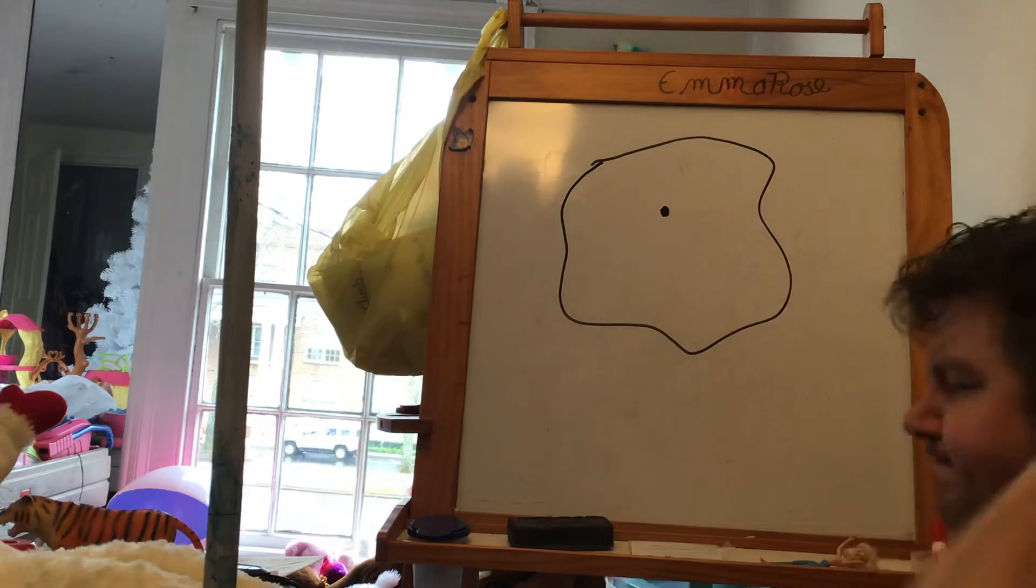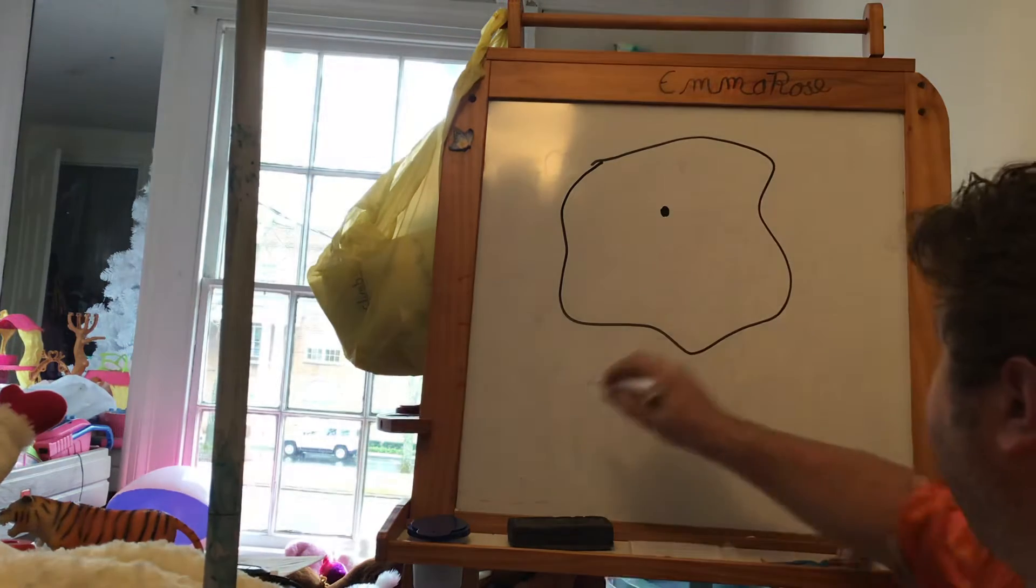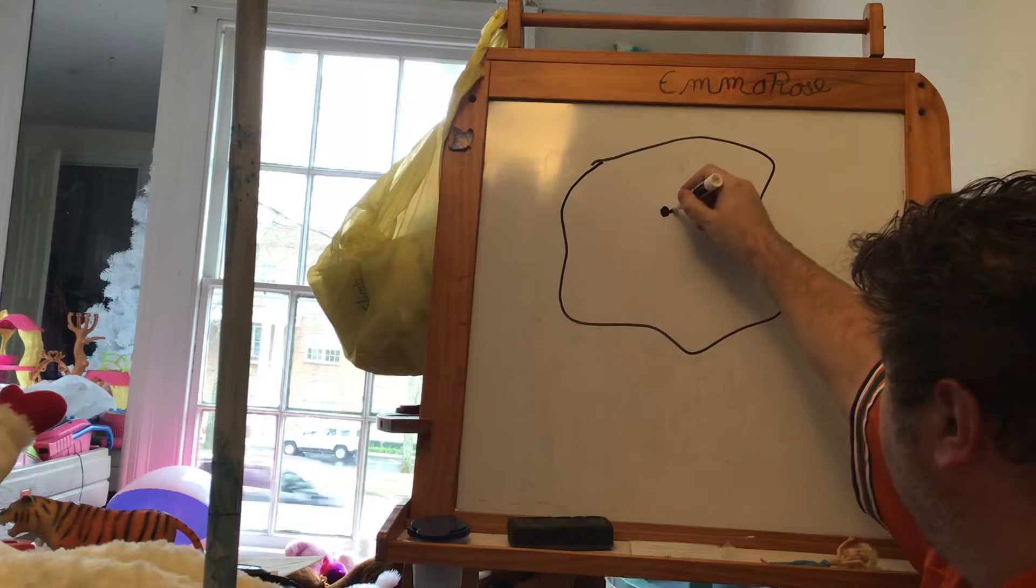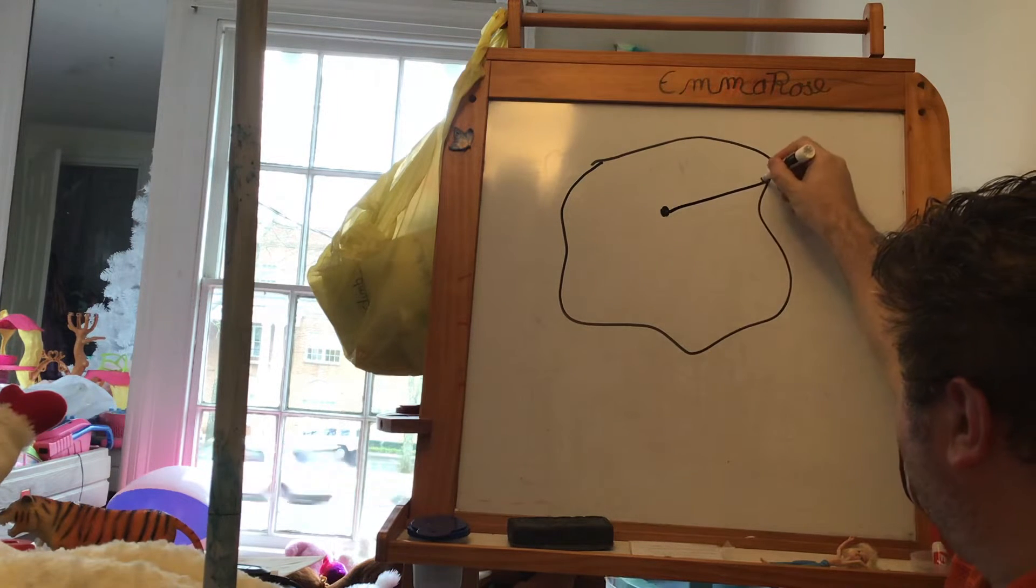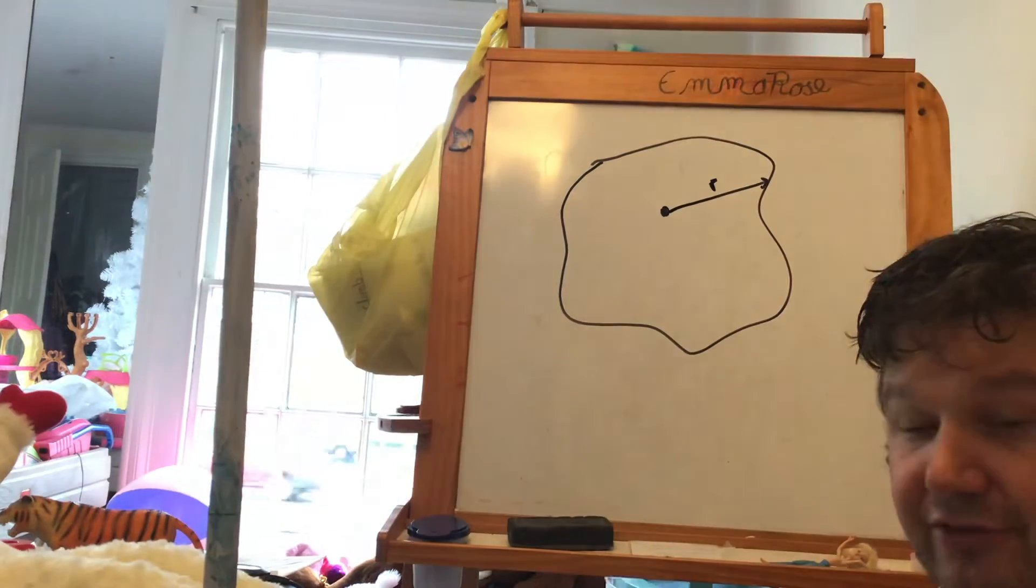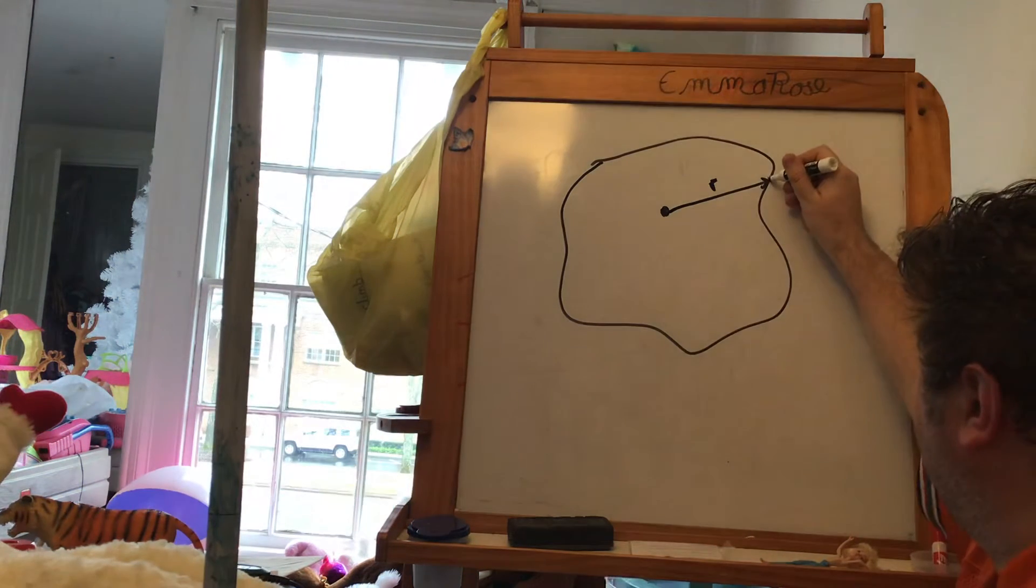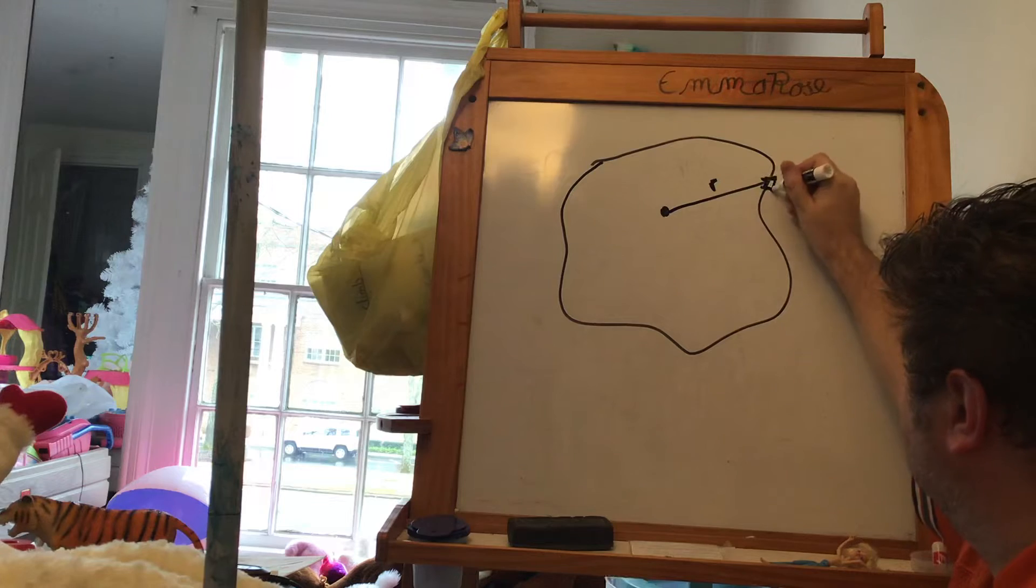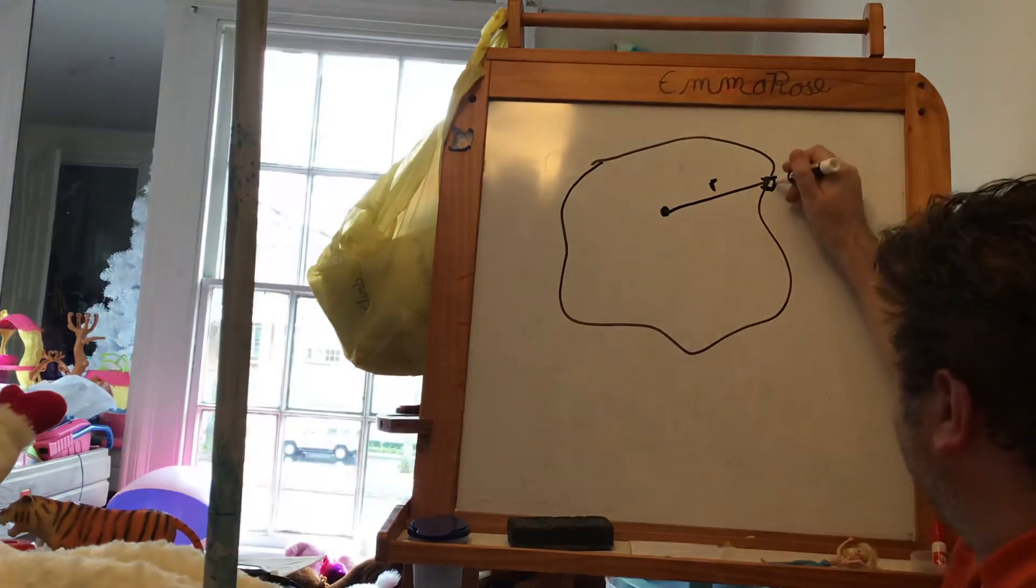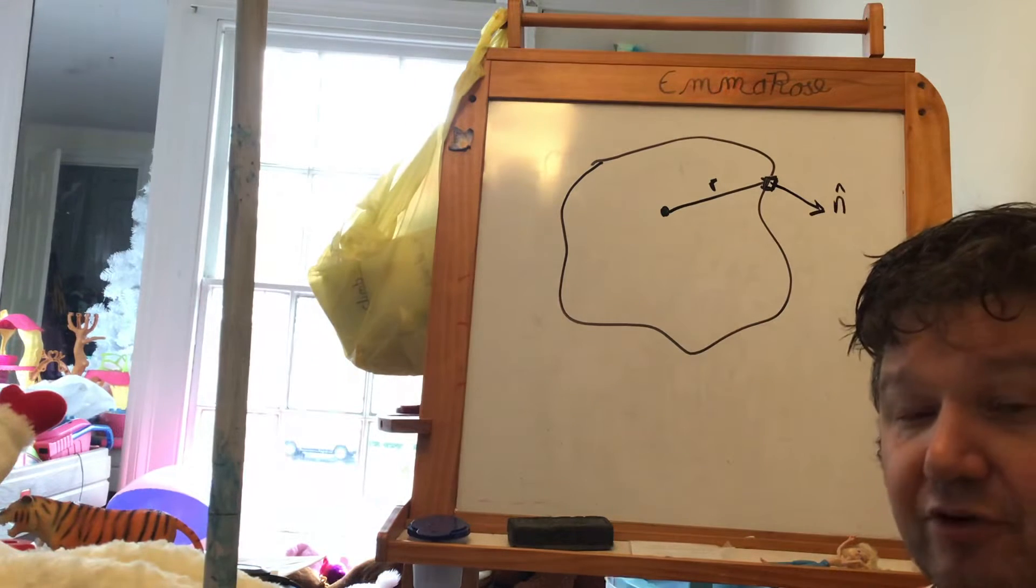So, if I try to prove Gauss's law, here I have a distance to the edge of the surface from the point charge. So, now here I have an area. Now, the area points out from the surface. It points out from the surface there.